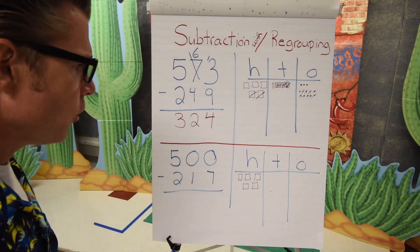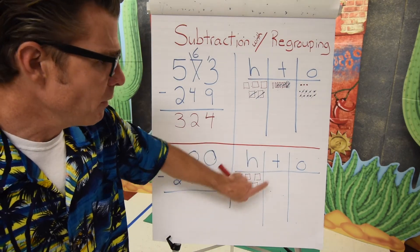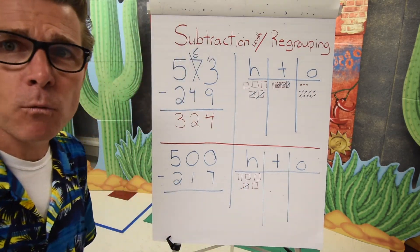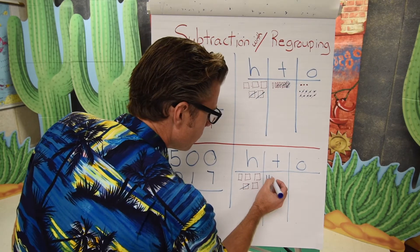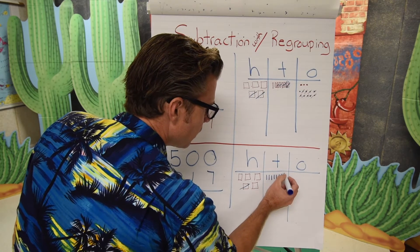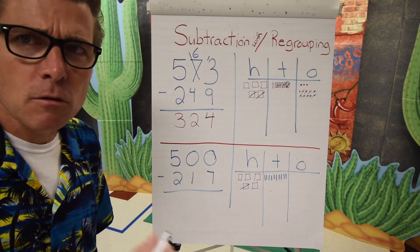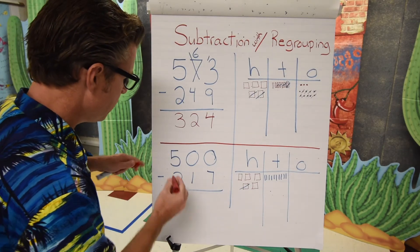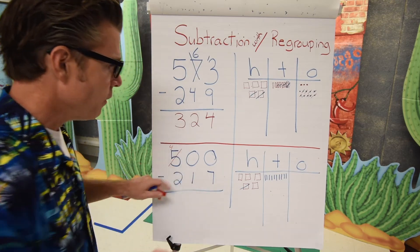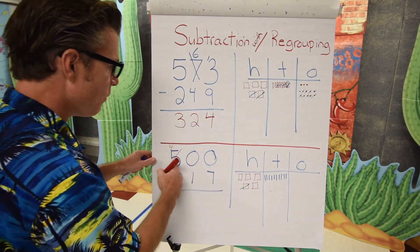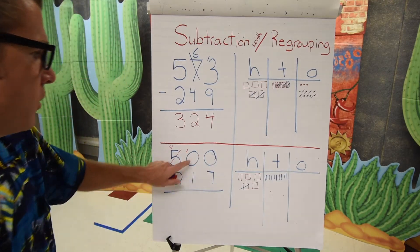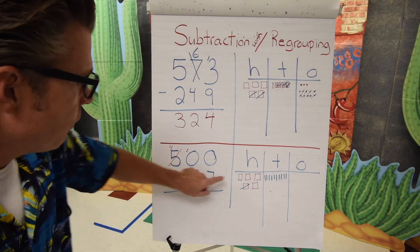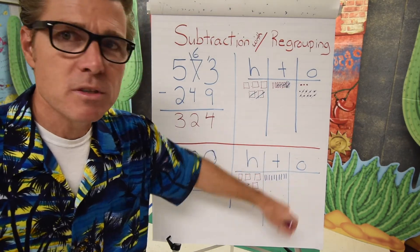We can come over to the hundreds spot because there are five hundreds there. We can break this out in groups of ten — there are ten tens in a hundred. So I take one of those hundreds away and count out ten tens into the tens spot. Looking at our numbers: we came over to the five, crossed it out, and made it a four. We added one of those to the tens spot, so now I have four hundreds, ten tens, but still zero ones. We still need to get something into the ones place.